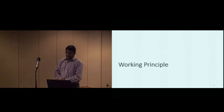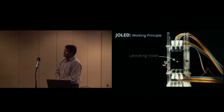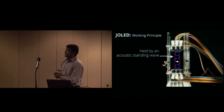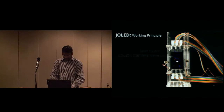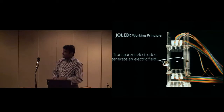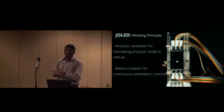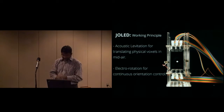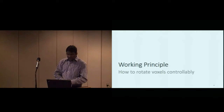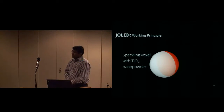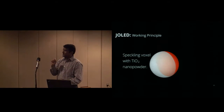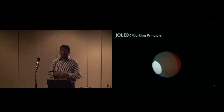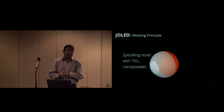How does JOLED work? We use acoustic levitation — standing waves using two phased arrays at the top and bottom to levitate the objects. We then use transparent electrodes around the levitation volume to manipulate the voxels. To rotate the Janus objects, we put a tiny spot of dielectric powder — titanium dioxide, a common ingredient in white paint — on the voxel. It's white in color, doesn't cover the entire hemisphere, and can be painted over to conceal it.